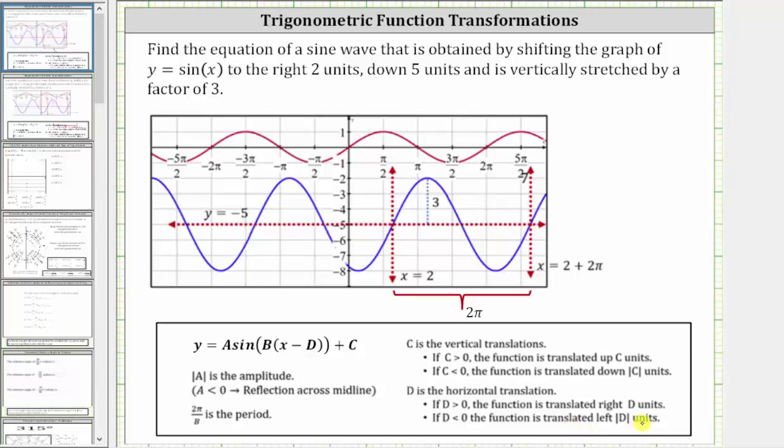And c indicates a vertical translation, a vertical shift, where if c is positive, the graph is shifted up c units, and if c is negative, the graph is shifted down the absolute value of c units.